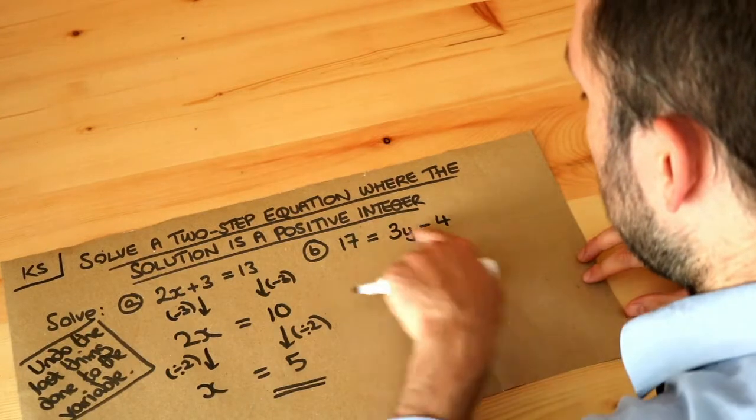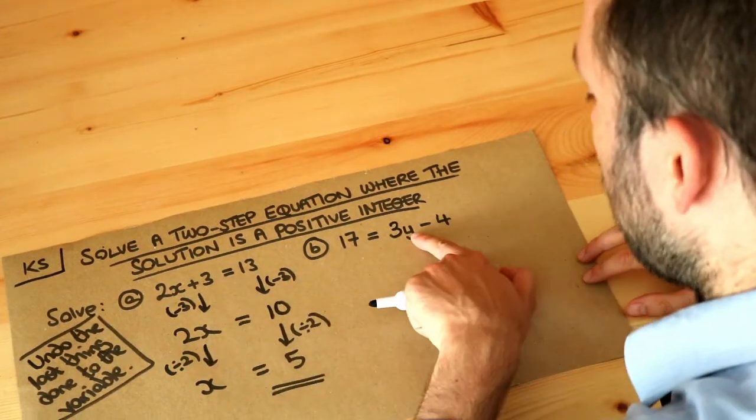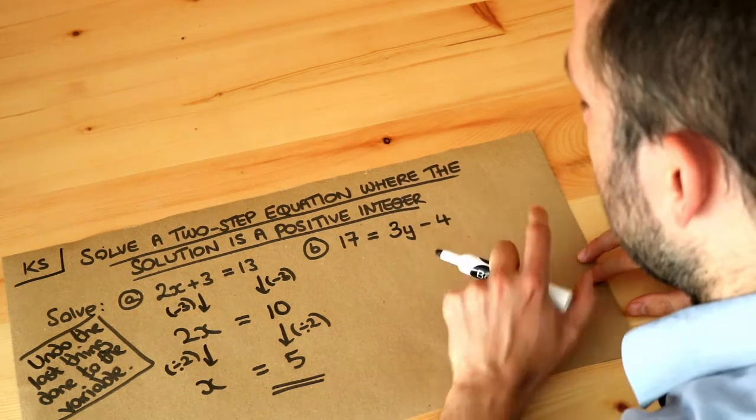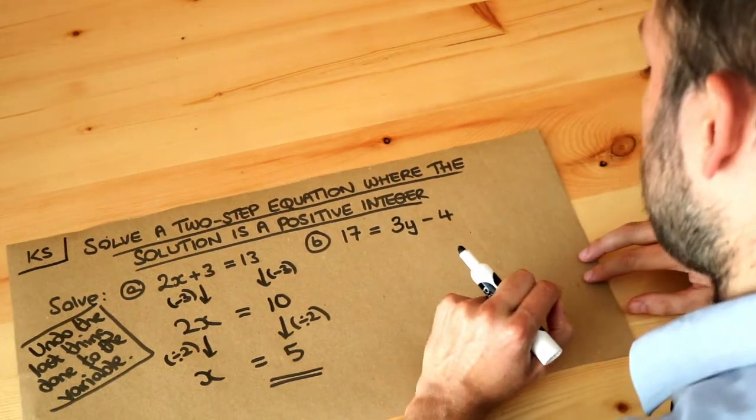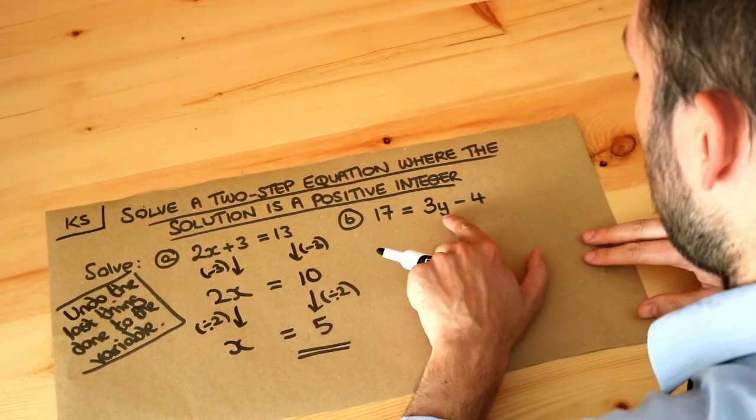Now let's do the same with this equation here. And note, by the way, that the variable, the letter, the y here, is on the right-hand side of the equation. That doesn't really make any difference when we solve it. We still think, what was the last thing done to the variable?